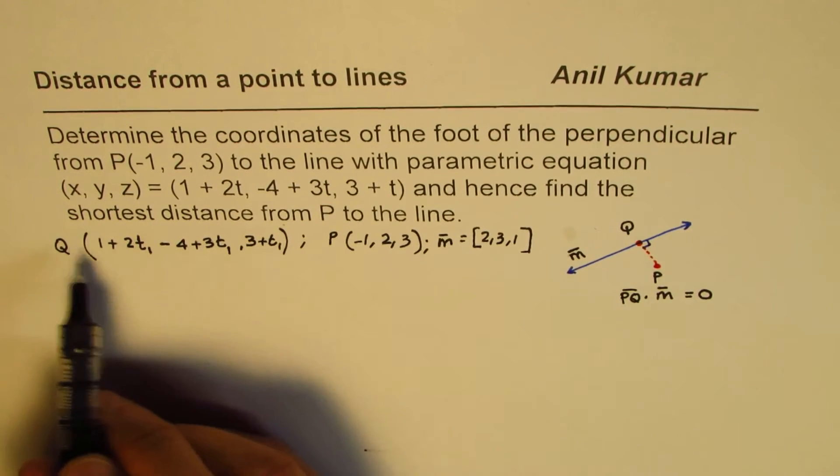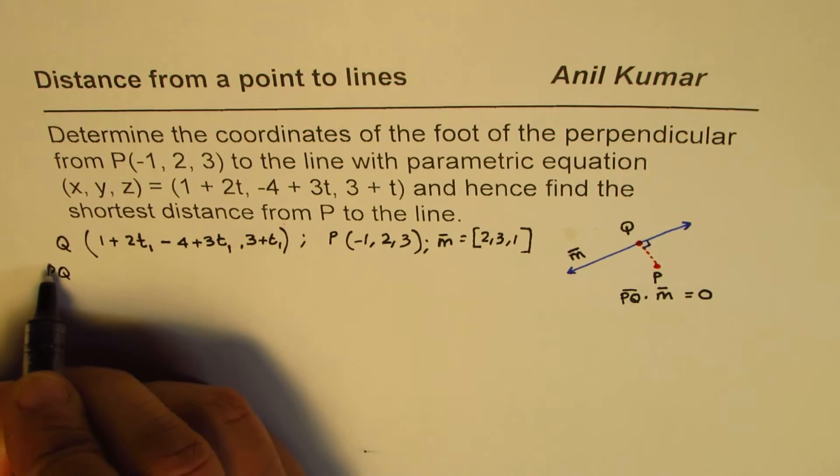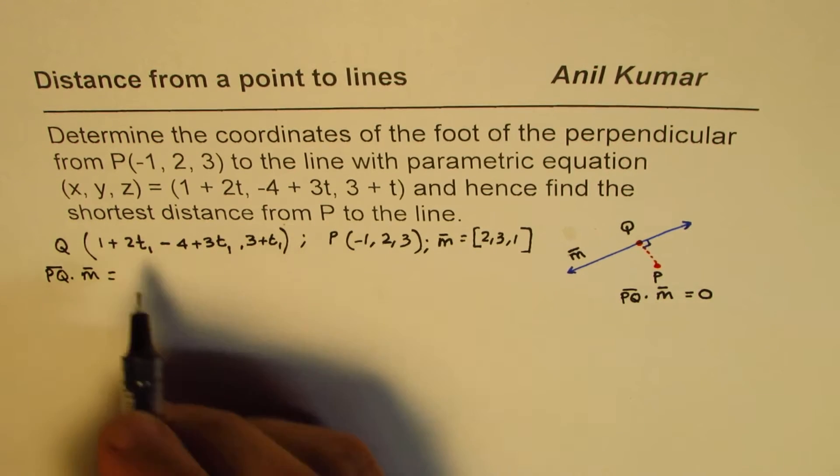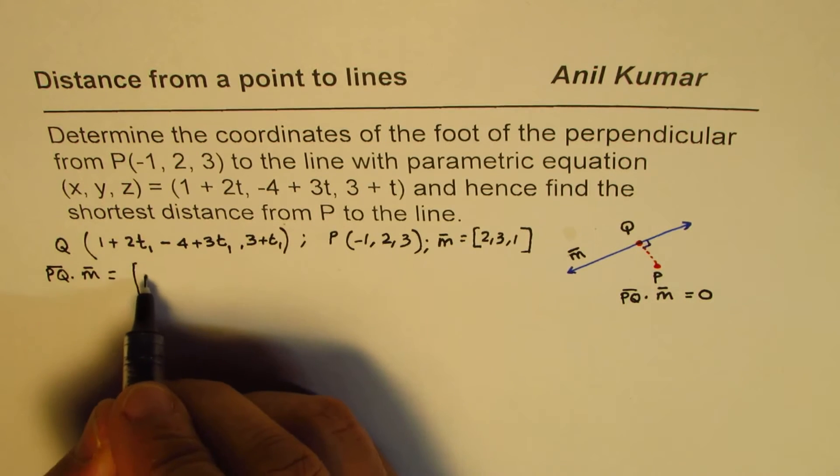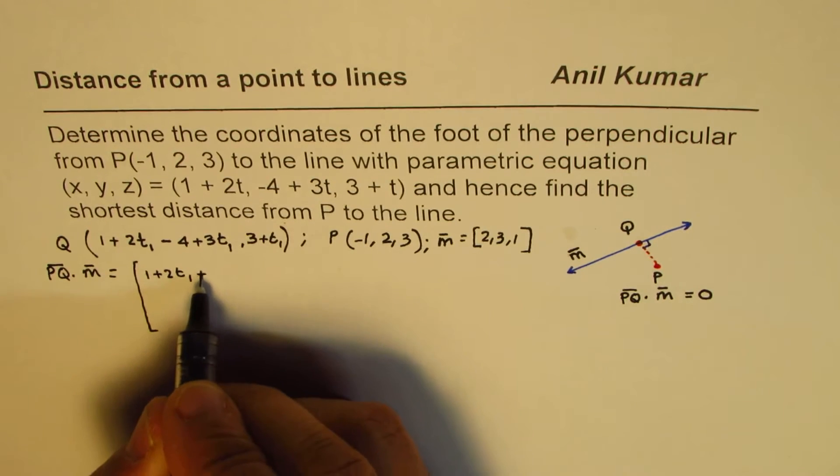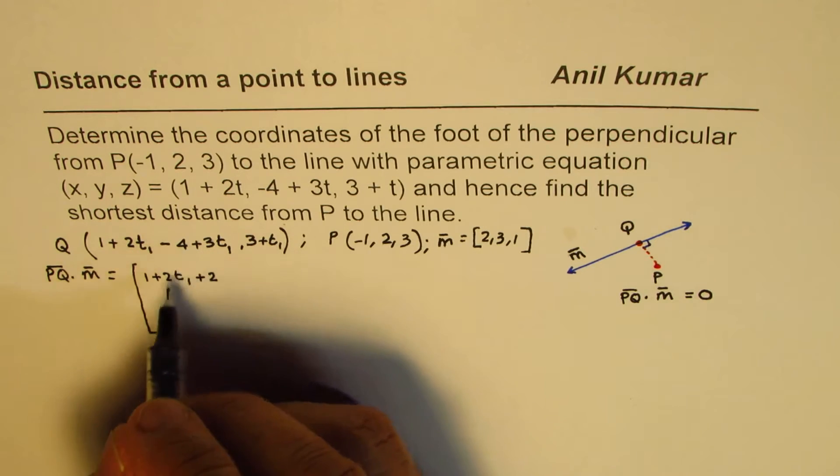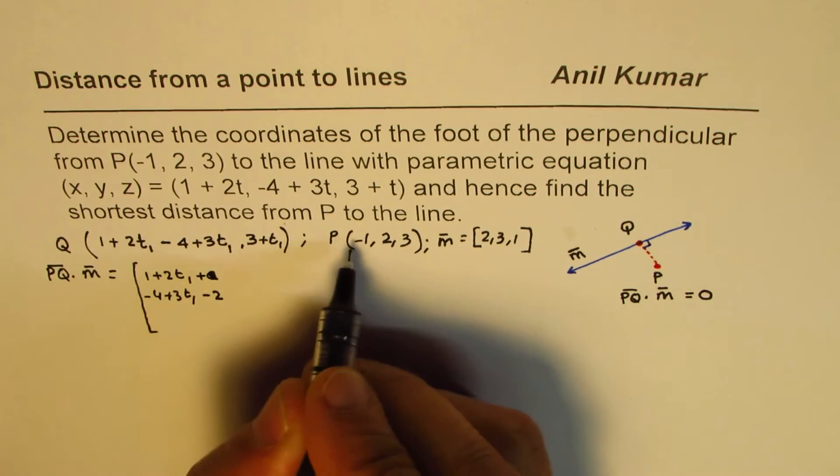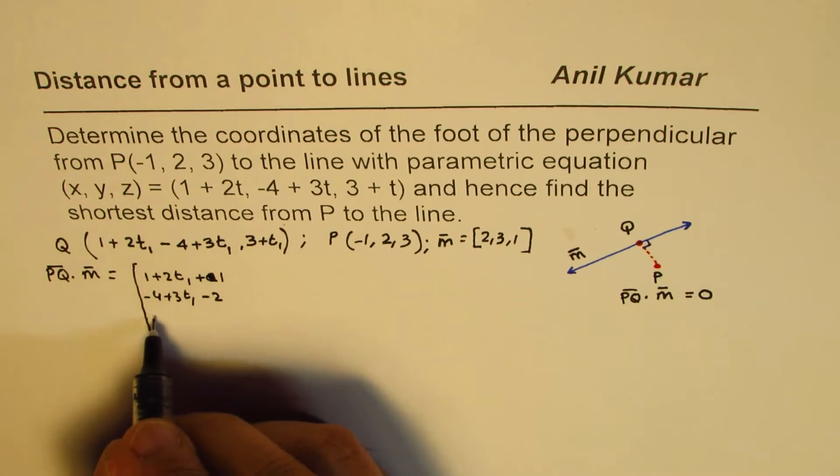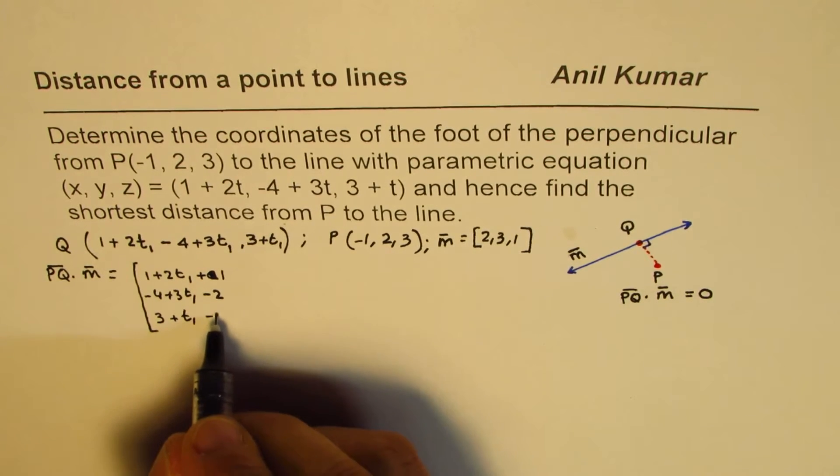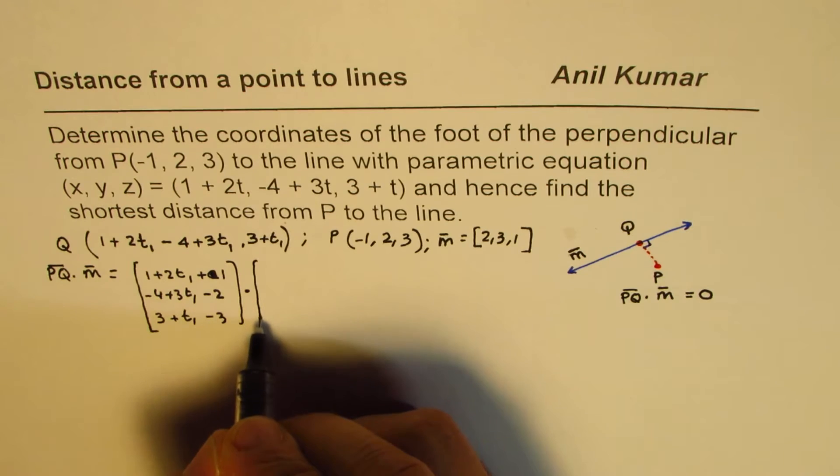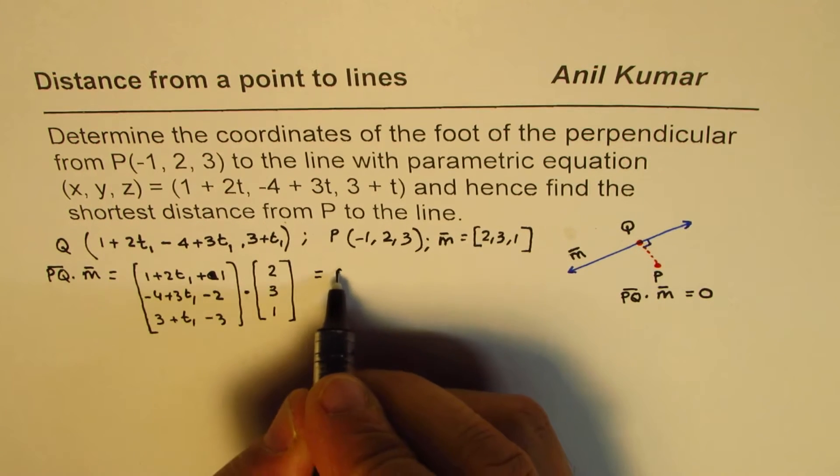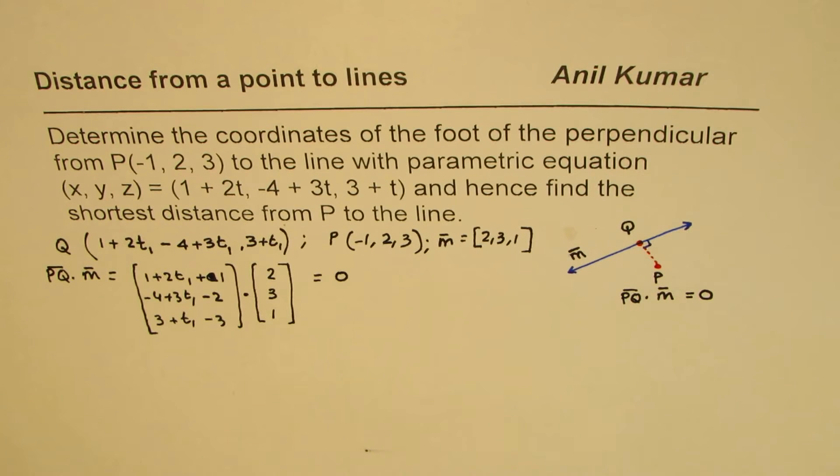So now from here, we can see what is PQ dot M. So PQ dot M is equal to P to Q, that means this minus that. So let me write it in matrix form: (1 + 2t1 + 1, -4 + 3t1 - 2, 3 + t1 - 3). So that is PQ dot (2, 3, 1). Now this should be equal to 0. So that's the whole idea. This dot product should be equal to 0.